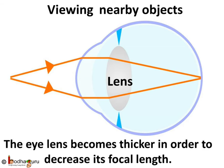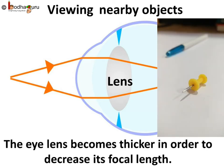When you are looking at objects closer to the eye, the ciliary muscles contract. This increases the curvature of the eye lens, and the eye lens becomes thicker. Consequently, the focal length of the eye lens decreases, and this enables us to see nearby objects clearly.